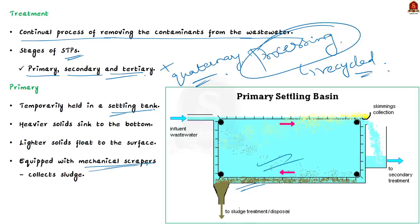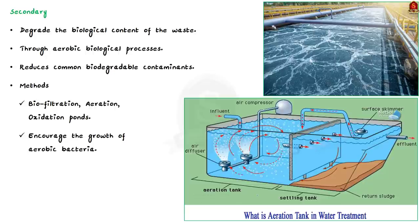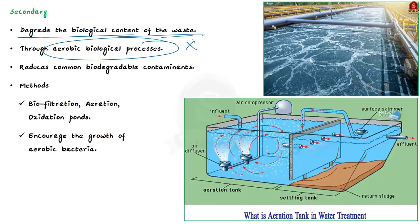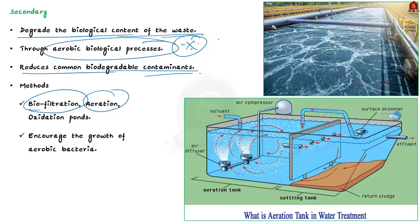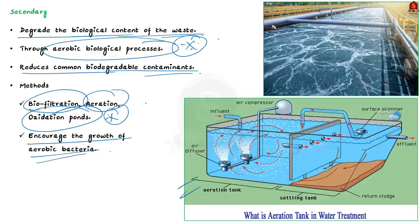The sludge is the matter that settles at the bottom of the tank. Secondary treatment works on a deeper level than primary and is designed to substantially degrade the biological content of the waste through aerobic biological processes. Methods such as biofiltration, aeration, and oxidation ponds are used to degrade the biological content. These processes encourage the growth of aerobic bacteria, which helps break down the contaminants in the water, effectively cleaning it.